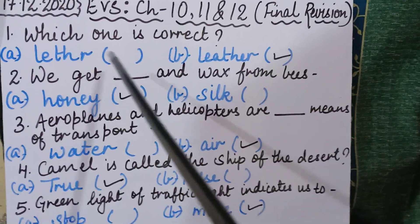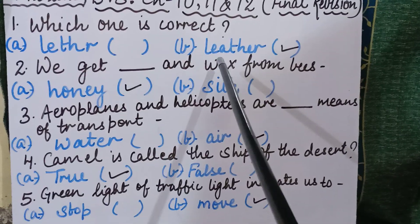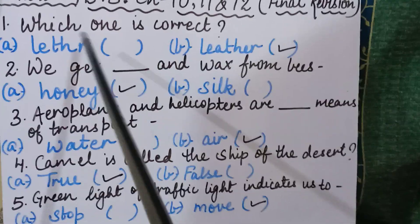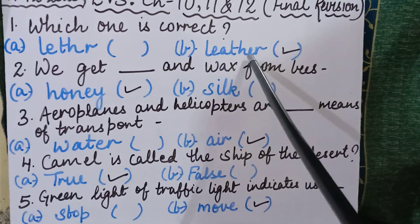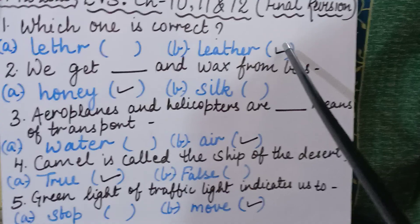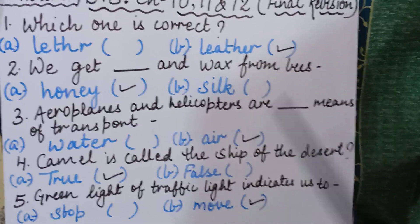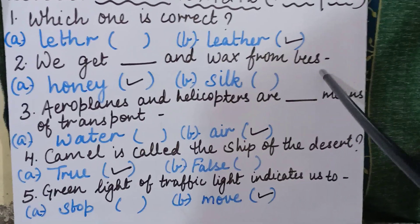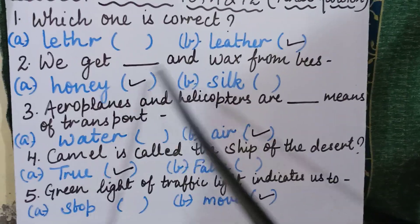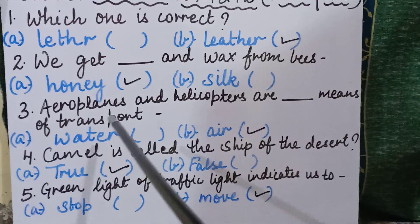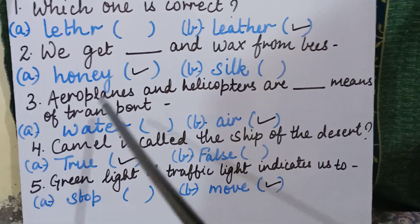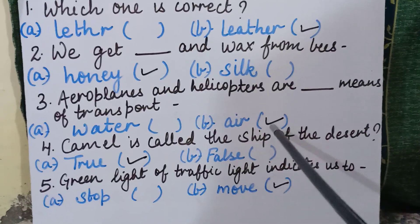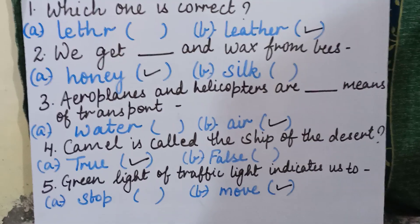Repeating questions 1 to 5: Question 1 — which spelling is correct? L-E-T-H-R or L-E-A-T-H-E-R? Correct: L-E-A-T-H-E-R, leather. Question 2 — we get dash and wax from bees: honey or silk? Correct: honey. Question 3 — aeroplanes and helicopters are dash means of transport: water or air? Correct: air transport.